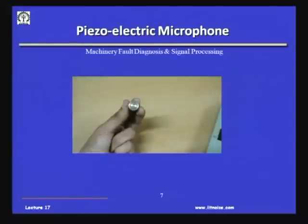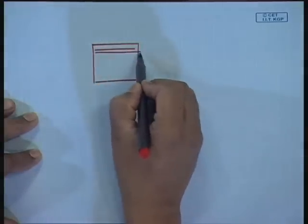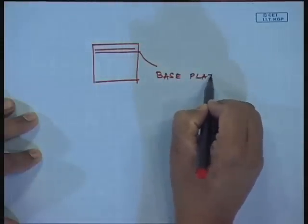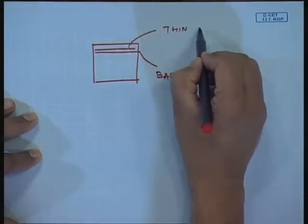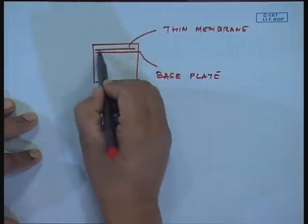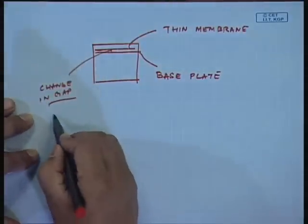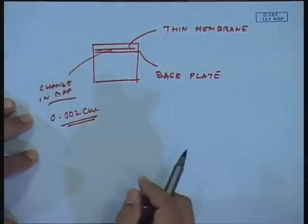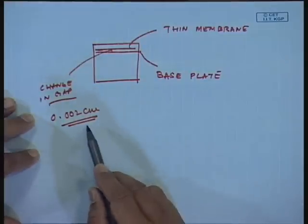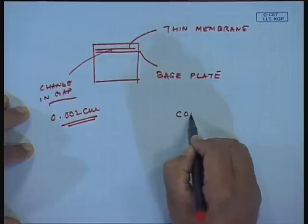Now let us talk about another important mechanical parameter - mechanical noise - which is essentially measured with a microphone. A microphone has two plates: one is the base plate and another is a very thin membrane or diaphragm. This membrane will deflect and this gap - which to begin with could be about 0.002 centimeters - is going to change. These microphones could be of many types; what I have drawn here is a condenser microphone.